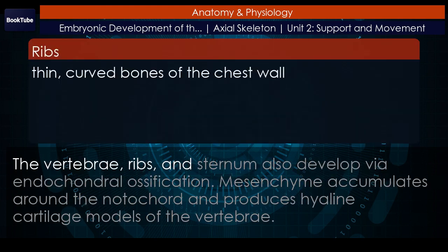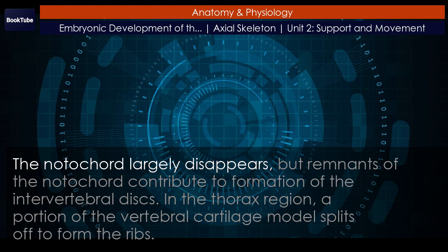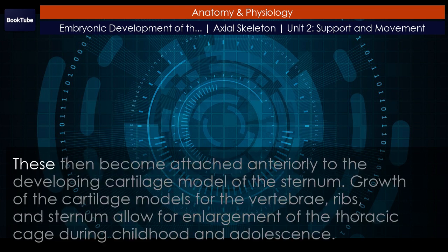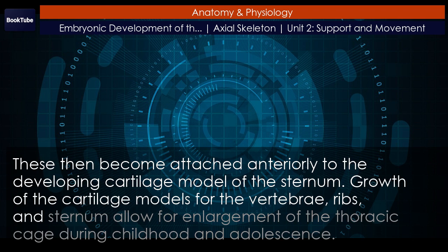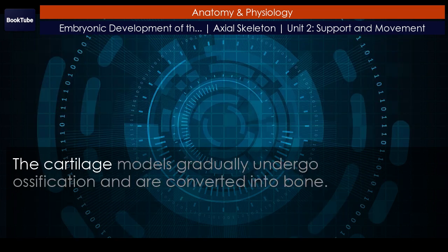The vertebrae, ribs, and sternum also develop via endochondral ossification. Mesenchyme accumulates around the notochord and produces hyaline cartilage models of the vertebrae. The notochord largely disappears, but remnants of the notochord contribute to formation of the intervertebral discs. In the thorax region, a portion of the vertebral cartilage model splits off to form the ribs. These then become attached anteriorly to the developing cartilage model of the sternum. Growth of the cartilage models for the vertebrae, ribs, and sternum allow for enlargement of the thoracic cage during childhood and adolescence. The cartilage models gradually undergo ossification and are converted into bone.